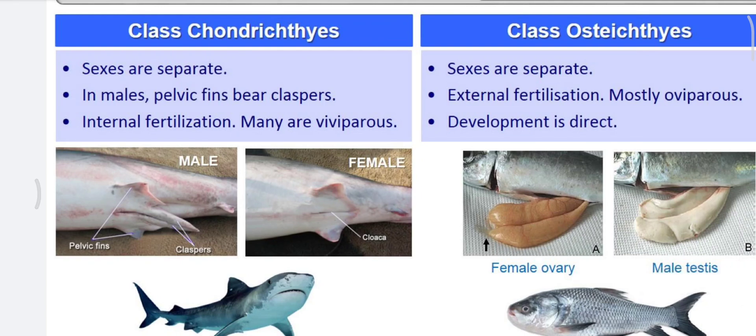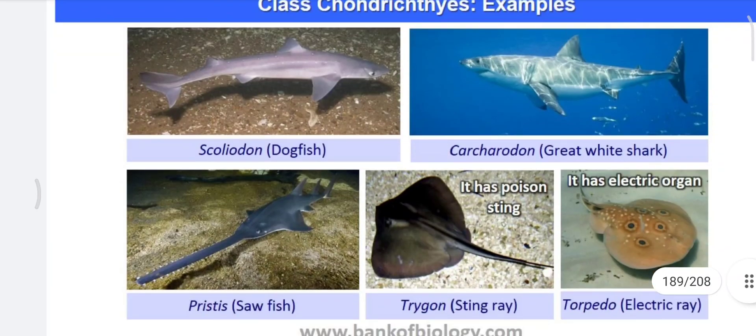Sexes are separate in both classes. In Chondrichthyes, males have pelvic fins with claspers as copulatory organs, fertilization is internal, and many are viviparous. In Osteichthyes, sexes are also separate, external fertilization takes place, and development is mostly oviparous and direct — meaning there are no larval forms.